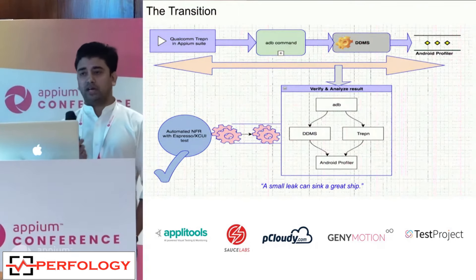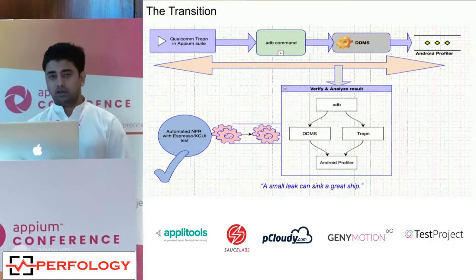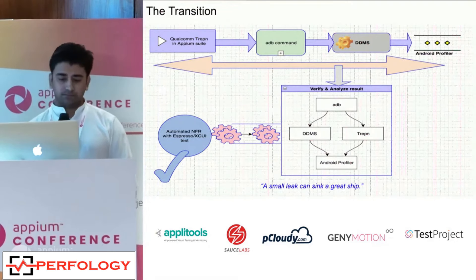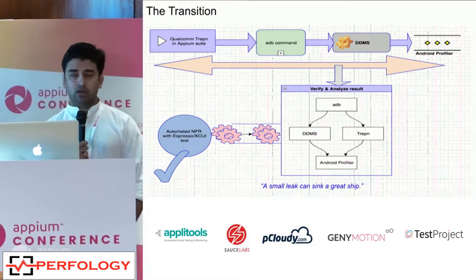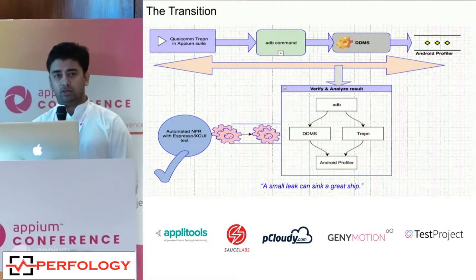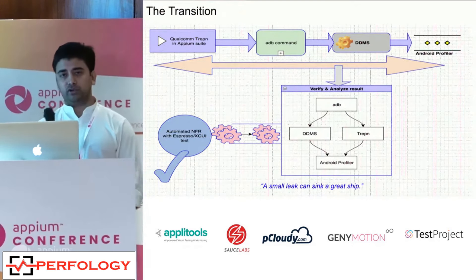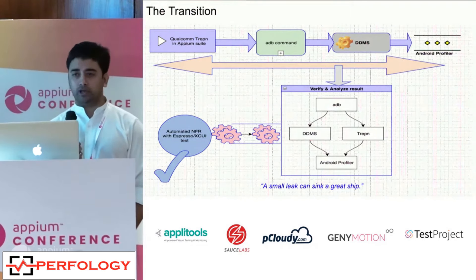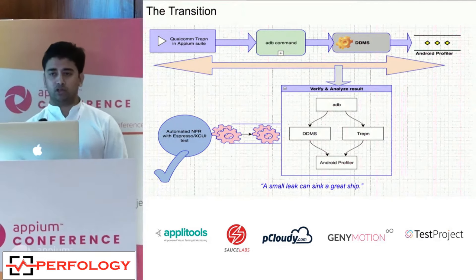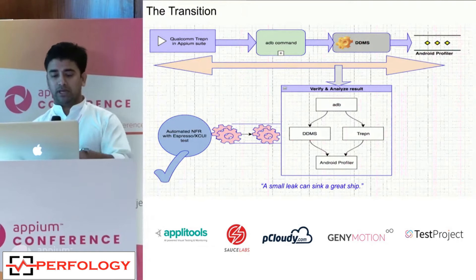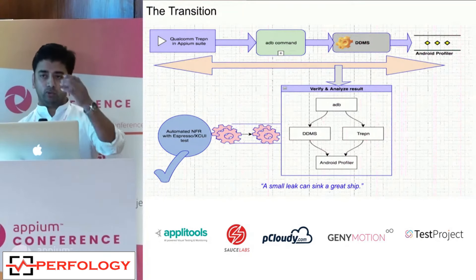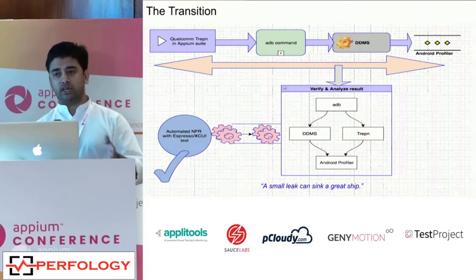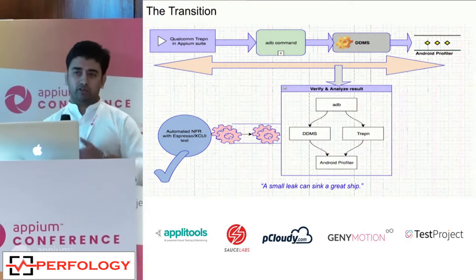However, with the same set of tests and same scenario executed multiple times, the results were not consistent — matrix reliability was a challenge. That led us to work with ADB commands. We created a script integrated with our automation framework and started capturing data. We got consistent data, but the problem was timing: we couldn't capture data at the exact moment an activity launched. We'd have to wait for an element to confirm the screen loaded, by which time the metrics were already gone.